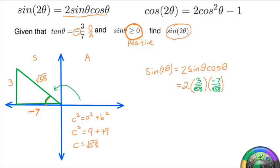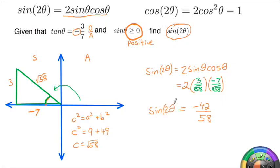After multiplying that all together, we get 2 times 3 times (−7), which gives us −42, over √58 times √58, which is just 58. So sine of twice the angle equals negative 42 over 58.